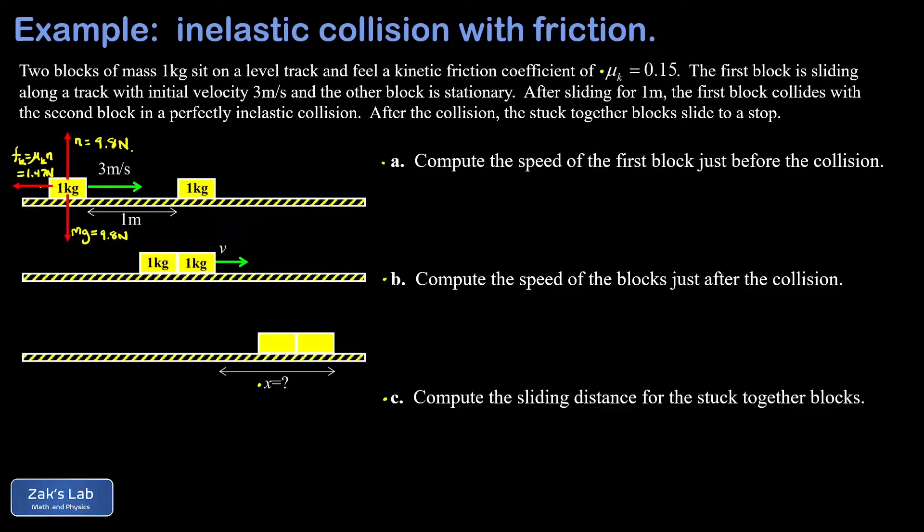Now that we have the horizontal force acting on this block, we can apply Newton's second law to figure out the magnitude of the acceleration. I'm going to write Newton's second law as A equals F over M. And we just plug in our force of 1.47 newtons. Plug in our mass of 1 kilogram. Dividing by 1 is easy enough. And I end up with a magnitude for my acceleration of 1.47 meters per second squared.